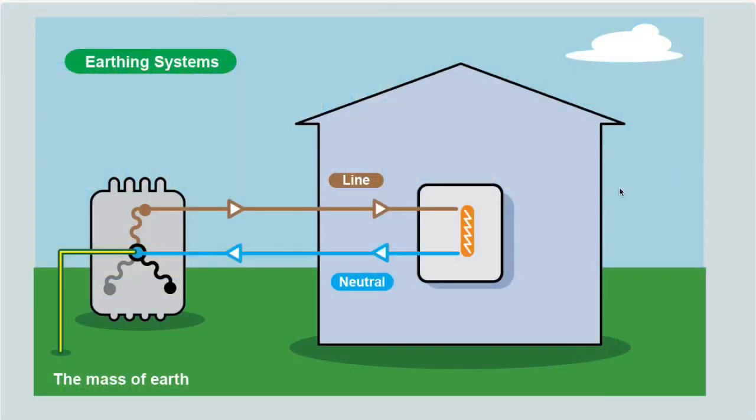Here's our very basic circuit. We have our house with our appliances, plugs, sockets, and lights. This is fed by a transformer, usually in the street. We have the live coming in, going through